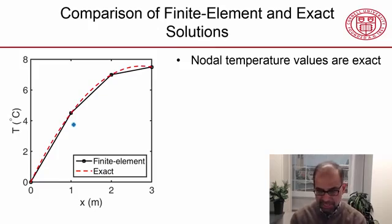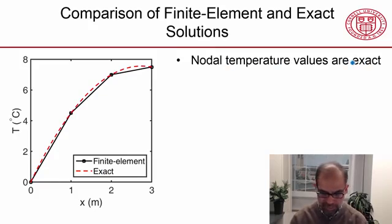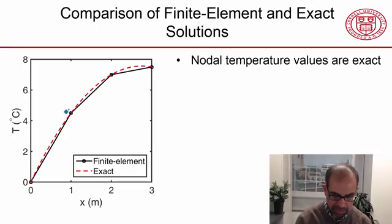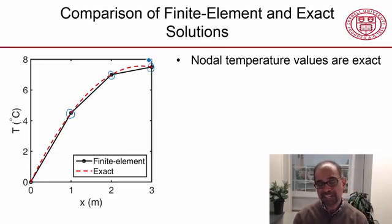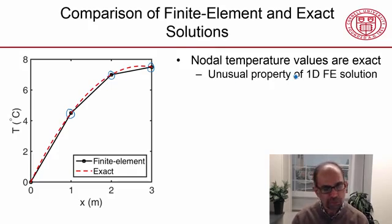And we see that the nodal temperature values are exact. So if I look at this nodal temperature value, this nodal temperature value, and this nodal temperature value, they match exactly with the exact solution. That turns out to be an unusual property of the 1D finite element solution, and you won't get this to be the case for 2D problems and more complicated problems.